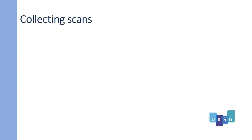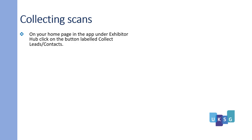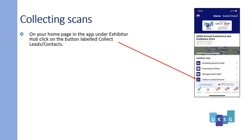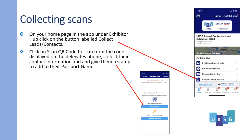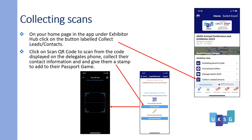How to collect scans. On your home page in the app, under Exhibitor Hub, click on the button labelled Collect Lead/Contacts. Click on Scan QR Code to scan from the code displayed on the delegate's phone. Collect their contact information and give them a stamp to add to their Passport Game.